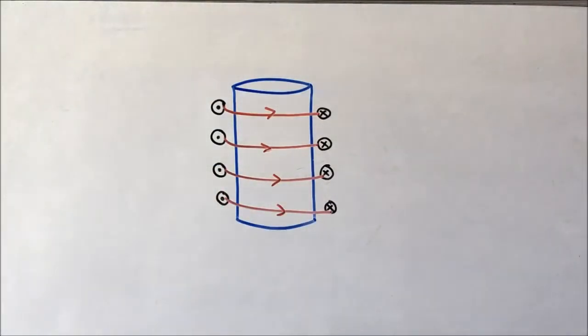This is the direction of the current. The question is: how to identify the poles created by it? This is actually like a solenoid.